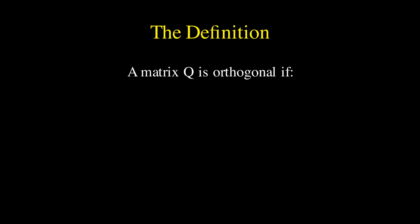A matrix Q is orthogonal if Q transpose Q equals the identity matrix. That's the definition, and it might seem simple at first, but let's unpack what this really means.